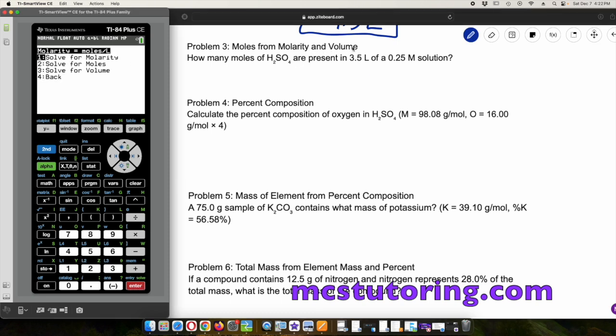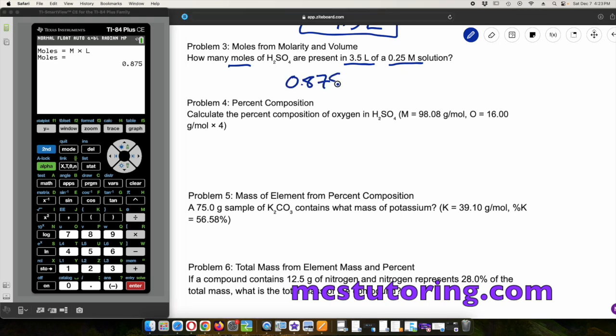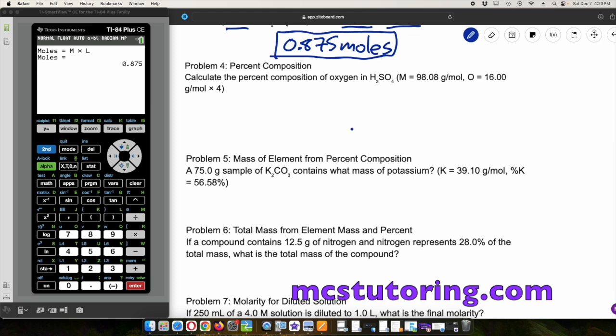Problem three, moles from molarity and volume. How many moles of H2SO4 are present in 3.5 liters of a 0.25 molarity solution? We're going to solve for moles here. The molarity is 0.25 molarity solution, and then the volume in liters is 3.5. It looks like we've got 0.875 moles. Some teachers are persnickety about certain things like circling, boxing, or underlining your answer and labeling units.